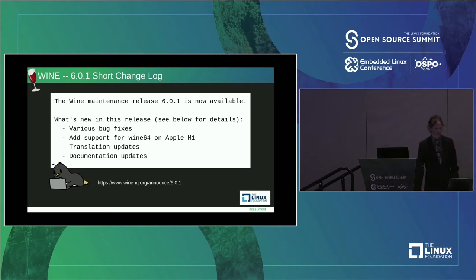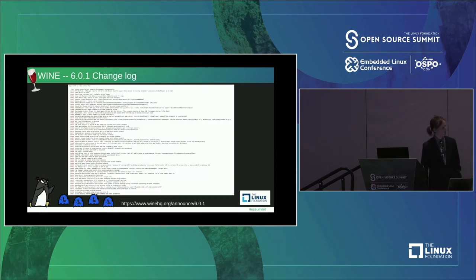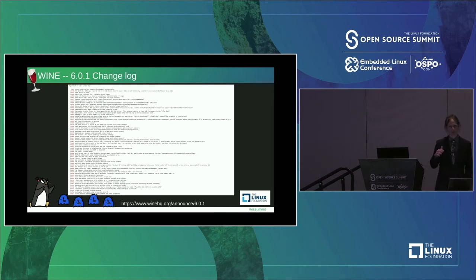Looking at a Wine release short changelog, we see some fun things: added support for Wine64 and Apple M1, which means Wine has initial support on Apple's new Silicon. We have translation updates so it works in every language, documentation updates, and various bug fixes. This is kind of what goes into a release — all these patches came from Unstable, then Testing, and eventually made it here. Some patches are game-specific, some are general Wine fixes.